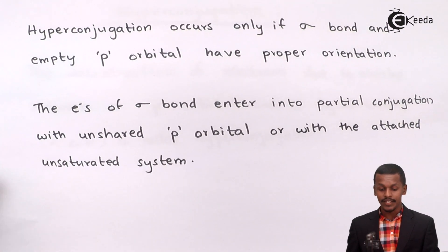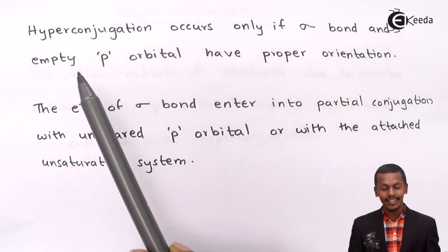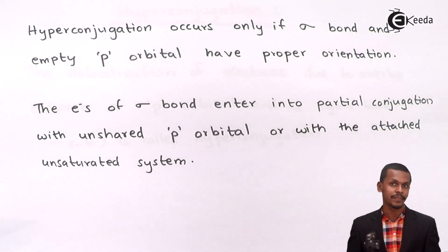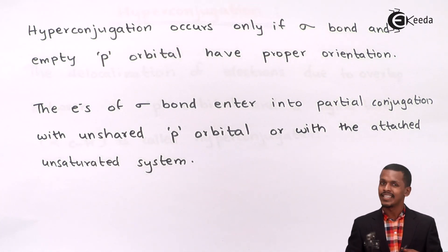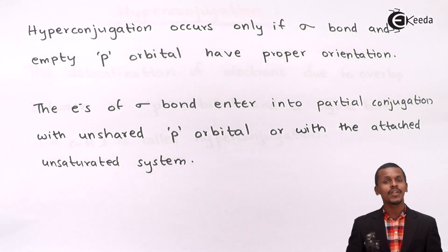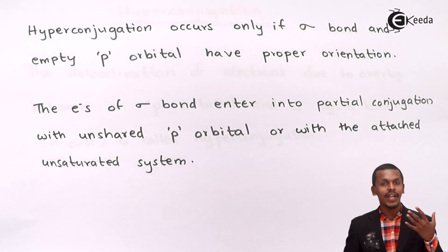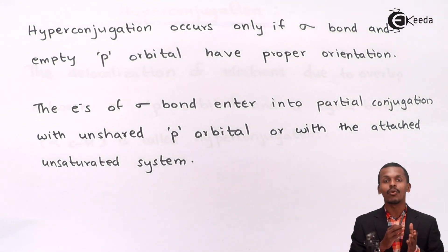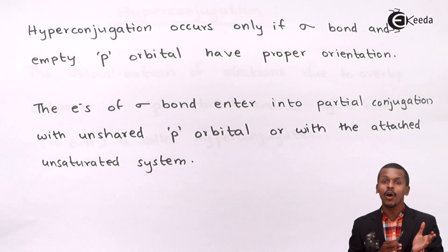Hyperconjugation occurs only if the sigma bond and the empty p orbital have proper orientation. This delocalization involves the two shared electrons of the sigma bond — since in any covalent bond two electrons are shared between two atoms — being transferred or delocalized onto the empty p orbital. This kind of delocalization is basically known as hyperconjugation.